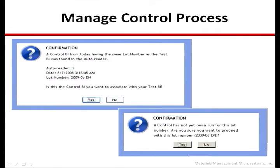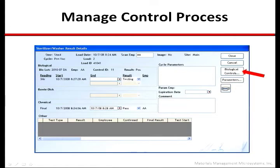When the lot number from the test BI is entered, the system will try to correlate that to a control BI with the same lot number in the same auto-reader for that same day. If one has already been recorded, the technician will be prompted to confirm they wish to use that control BI. If one is not found, then the technician will be prompted to run a control BI for that lot number, auto-reader, and day. The system speaks to the recommended practice for control biologicals — that one is required for each lot number, for each auto-reader, for each day. The system will recognize when a control is needed based on the auto-reader in which the test BI was placed.